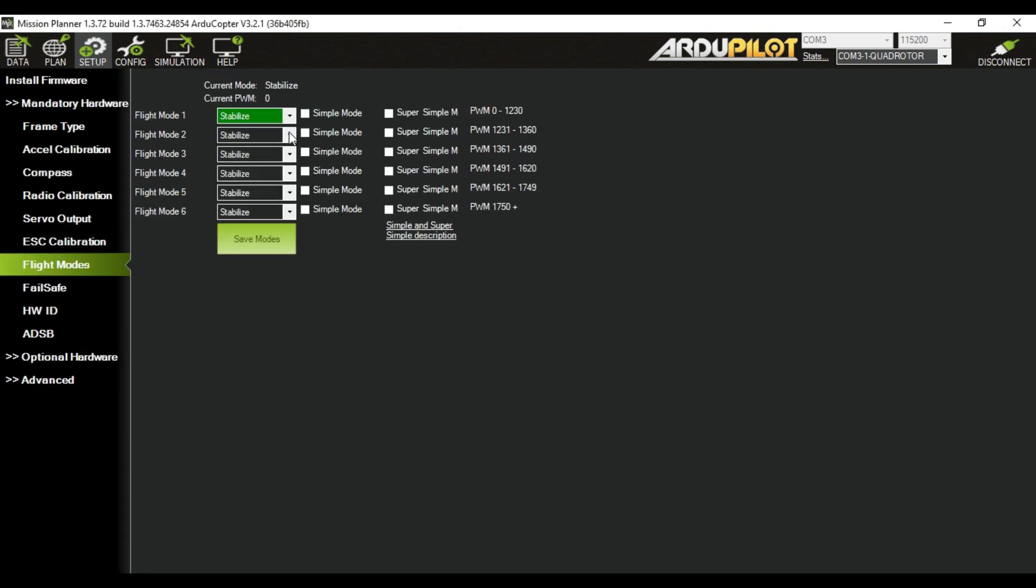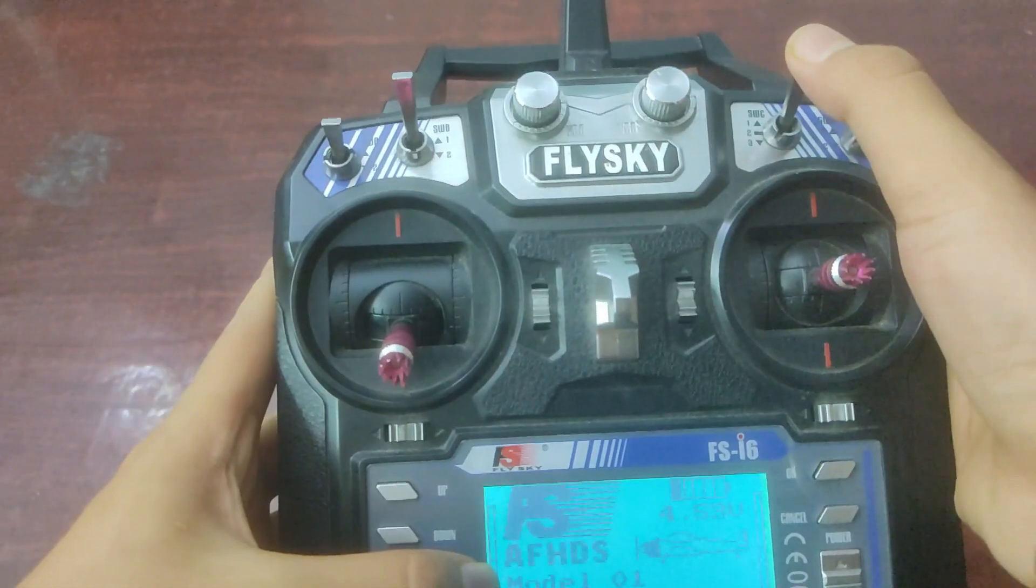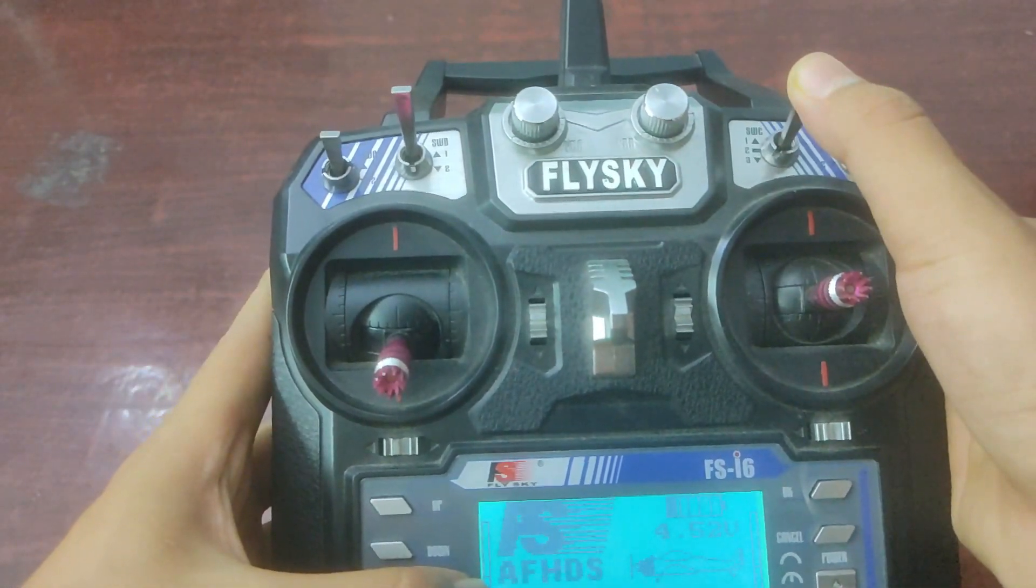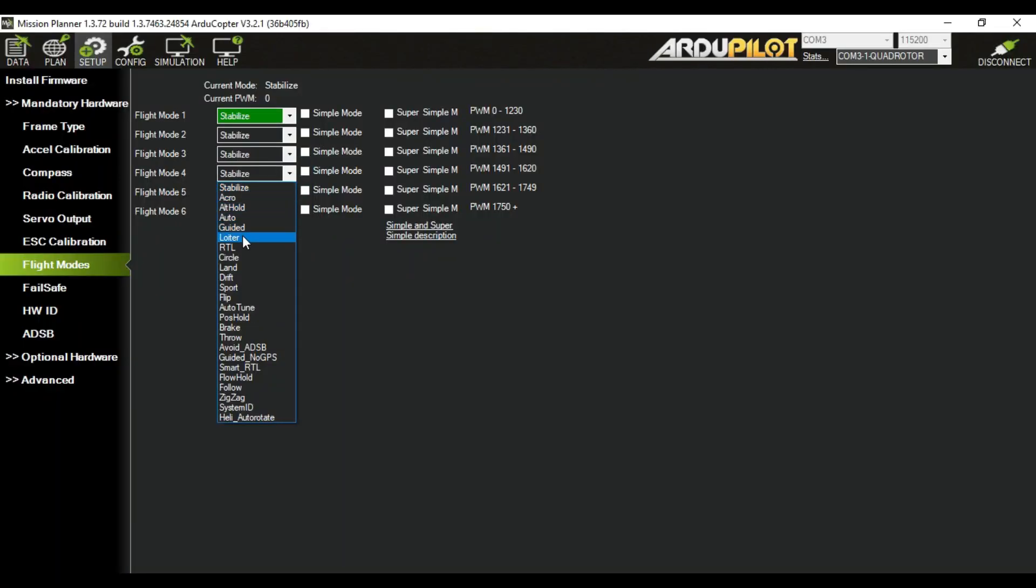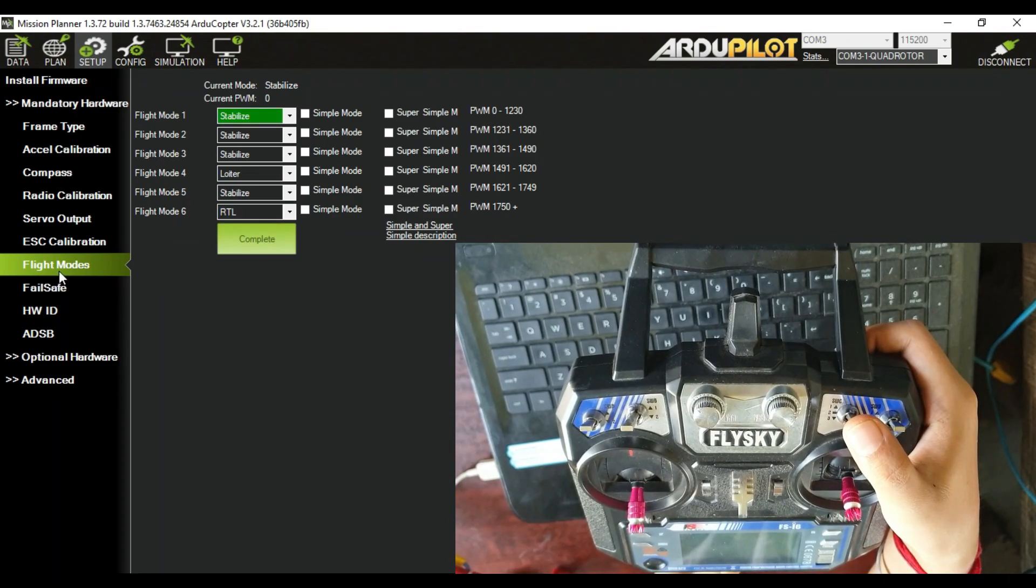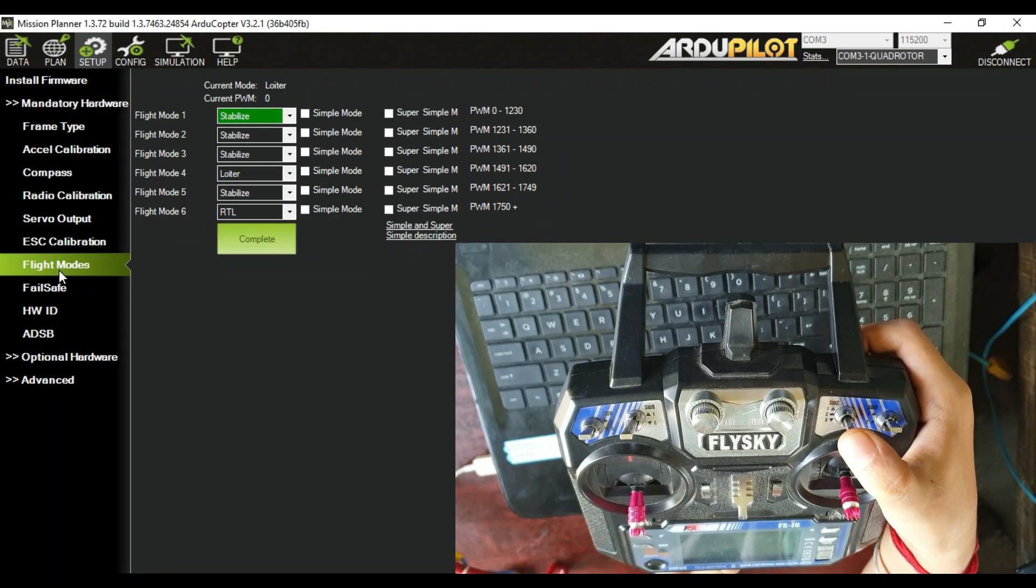Now we can set different flight modes by using our transmitter switches. In this case I am using these three position switches of FlySky i6 for three modes. I am setting stabilize, loiter, and RTL mode on it. You can use the others also, and it is working perfectly.